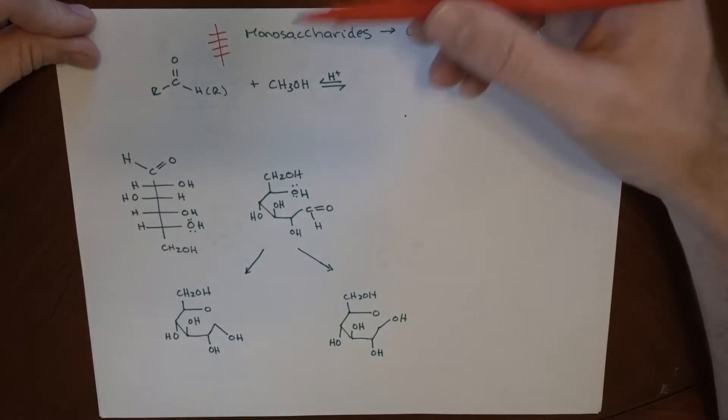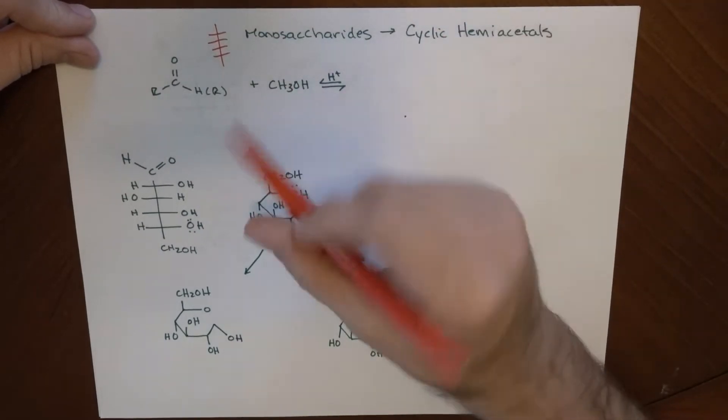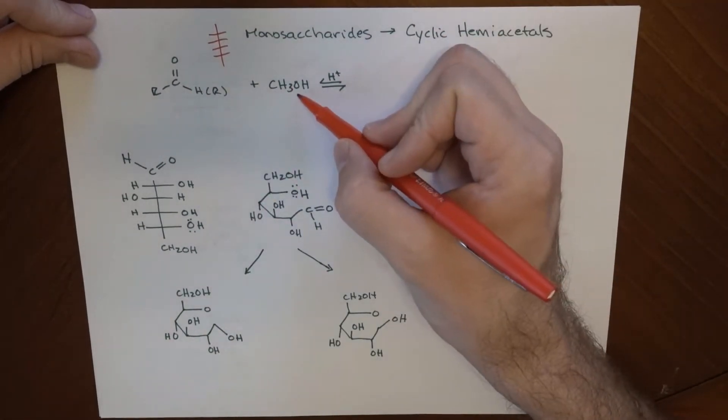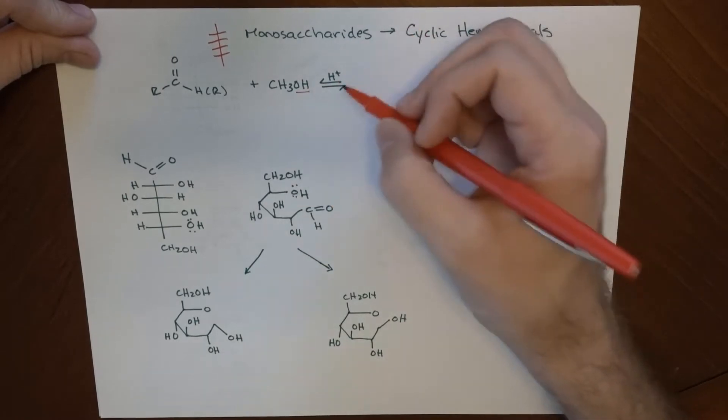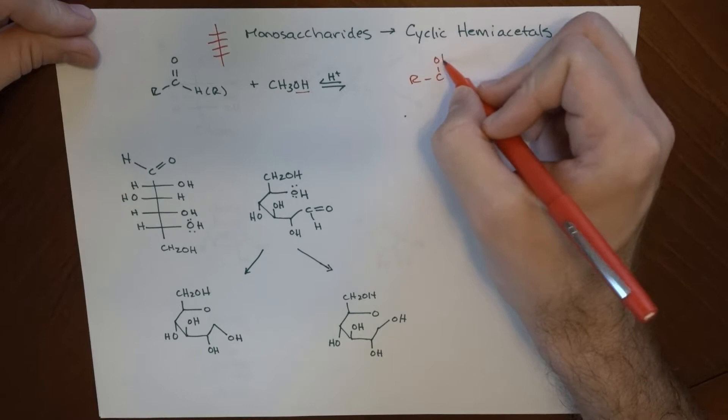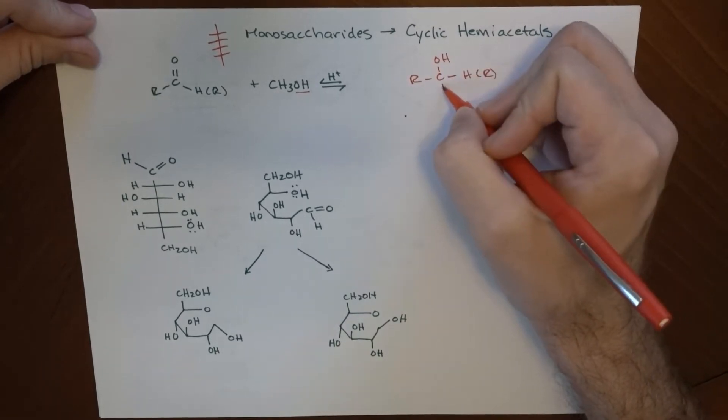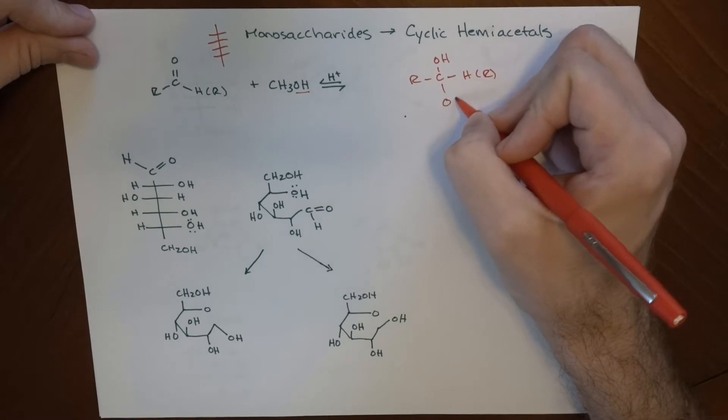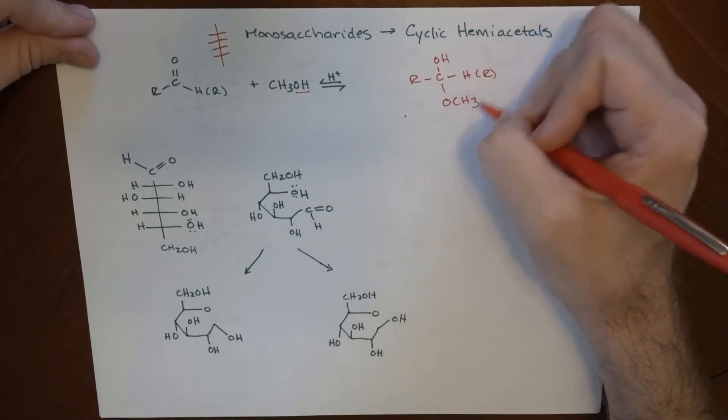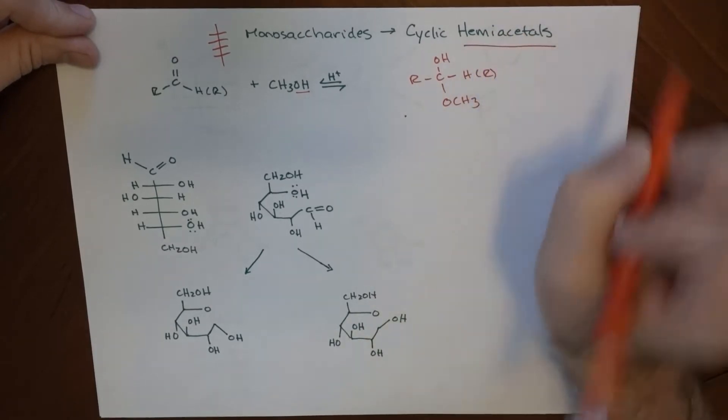We're going to make a hemiacetal, and just to remind you, a hemiacetal reaction looks a bit like this. So if we have some sort of ketone or aldehyde, we're going to react it with an alcohol group in the presence of acid. I'm not going to go through the mechanism for it, but the basic overall reaction is this. This can be the H or the R, and now we've got an OCH3. So we've got a new methoxy group that's been added. We have an alcohol that's here, and this is our hemiacetal.